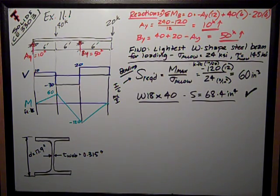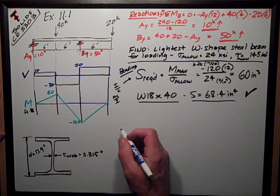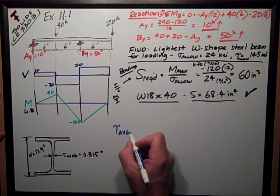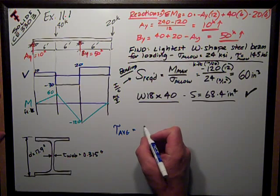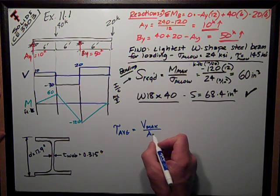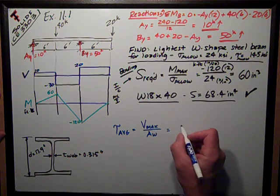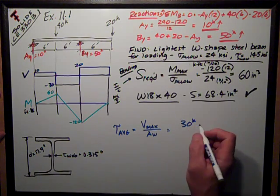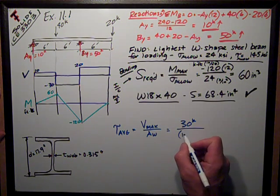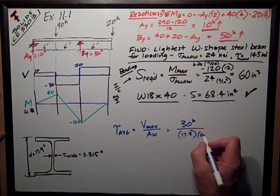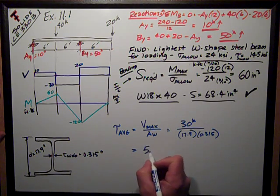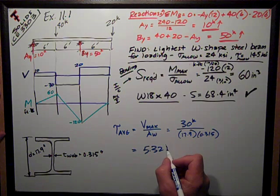And my maximum shear is this negative 30 here. So my shear stress calculation just looks like, because it's a W shape I can just do the simplified method, use the average shear stress, and that's Vmax over the area of the web. So that is equal to 30 kips divided by the depth and the thickness of the web, 17.9, 0.315, that equals 5.32 KSI.